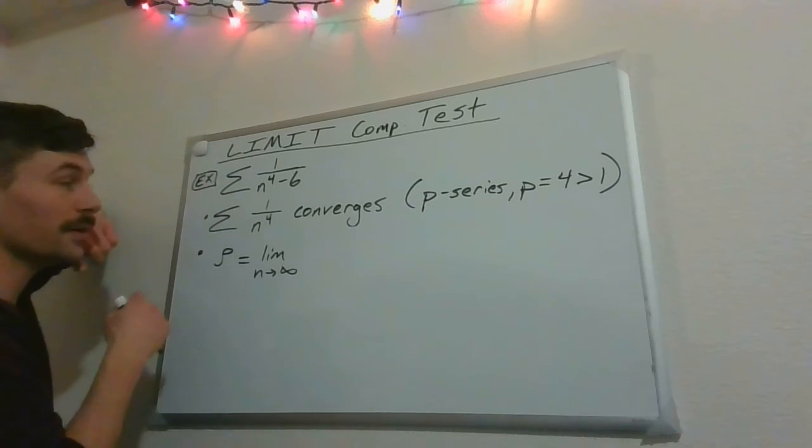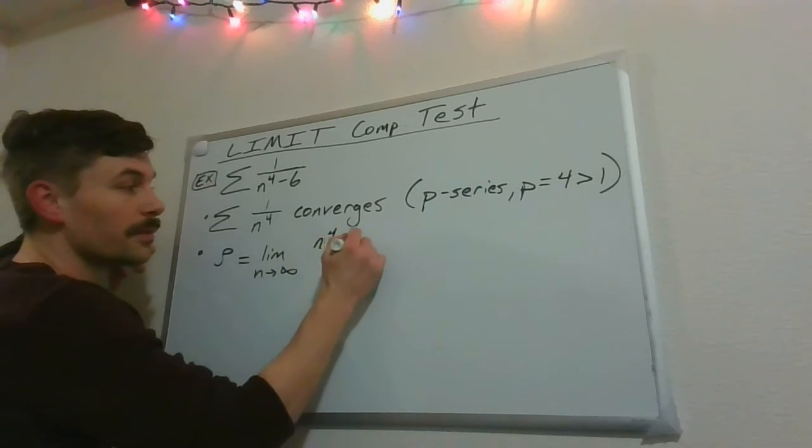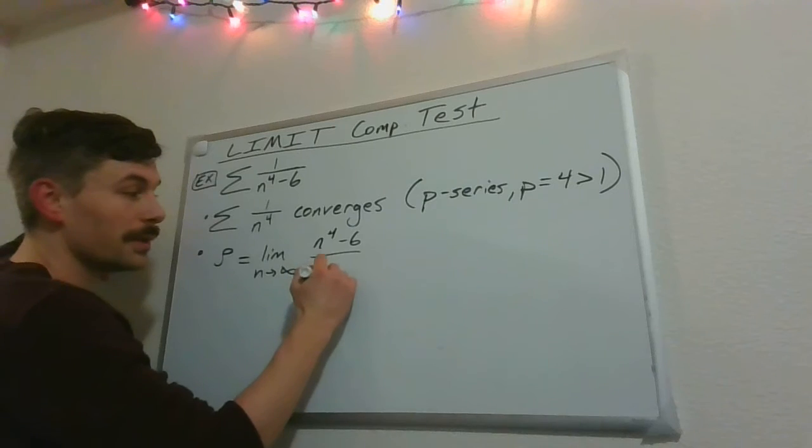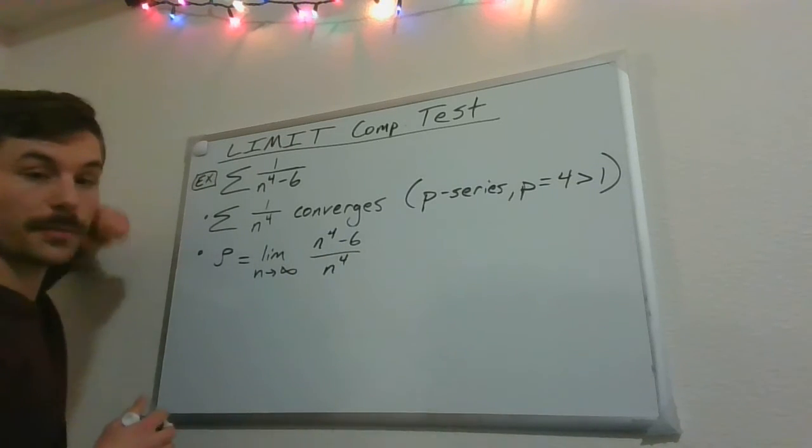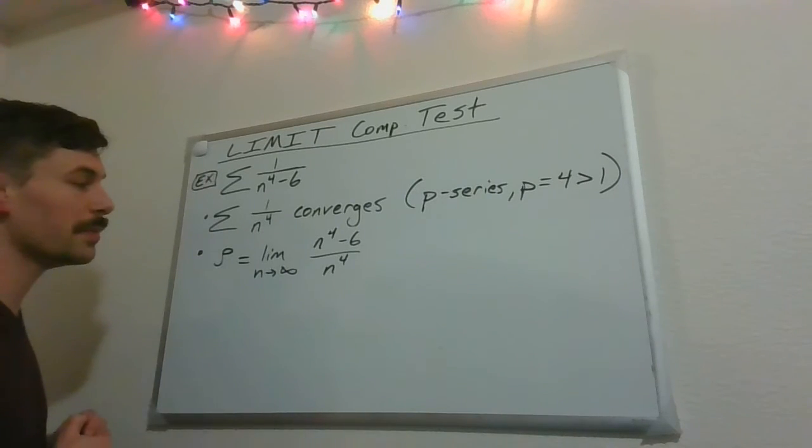We're dividing one by the other. So for my liking, I'd like that n to the 4th minus 6 to end up on top and that n to the 4th to end up on the bottom. It doesn't really matter. But personally, I think this is a little bit better.